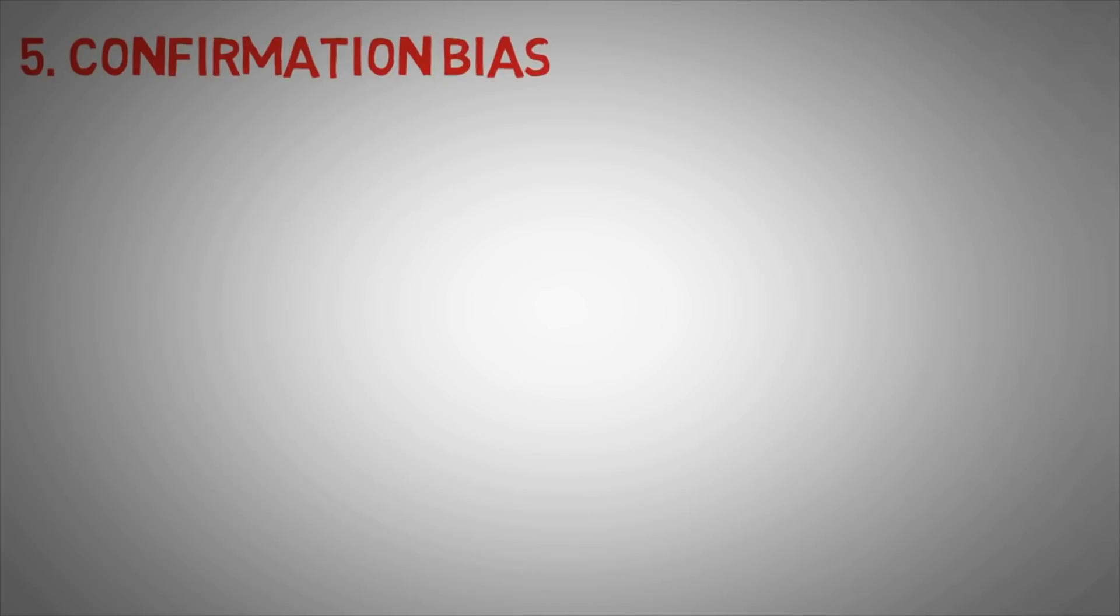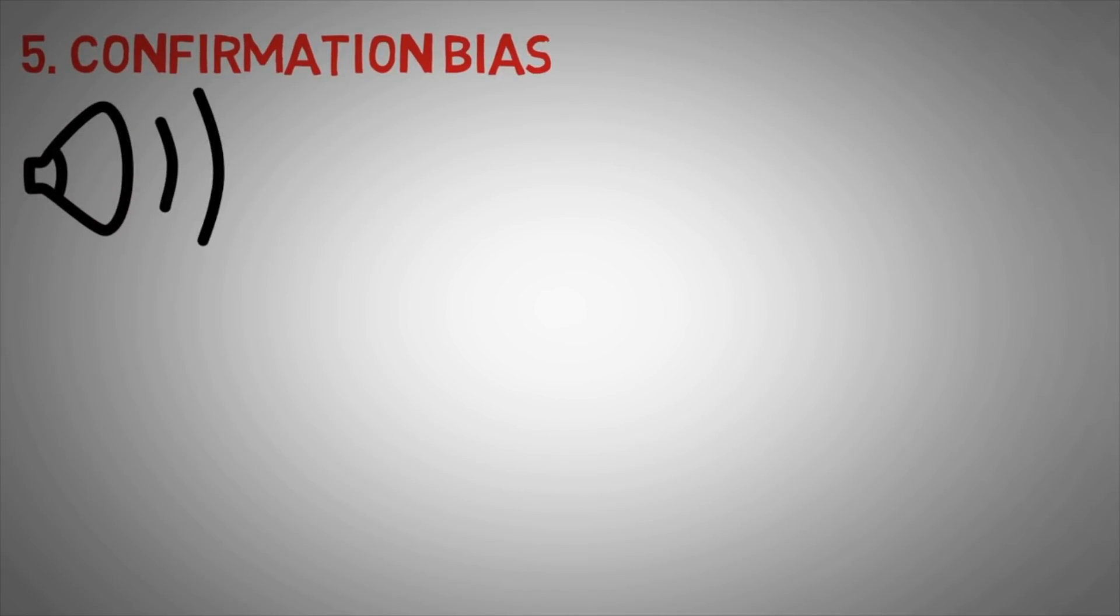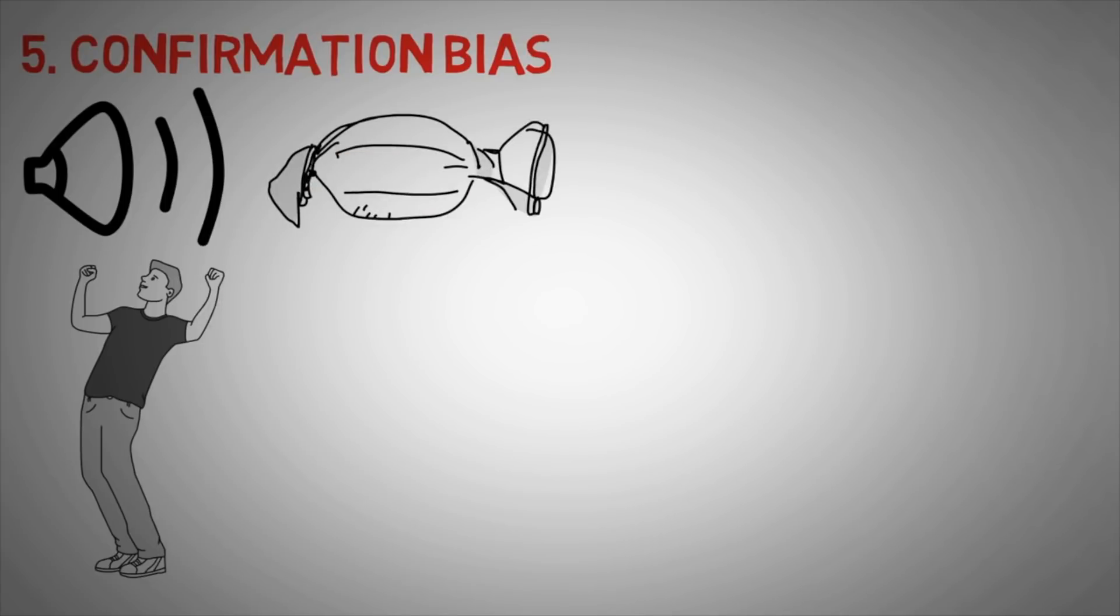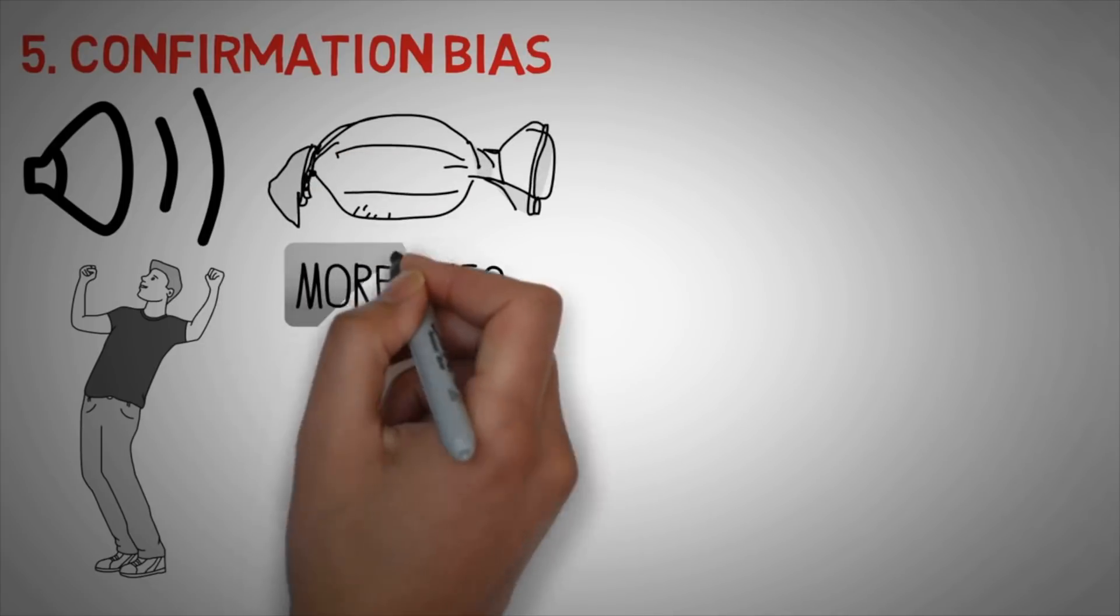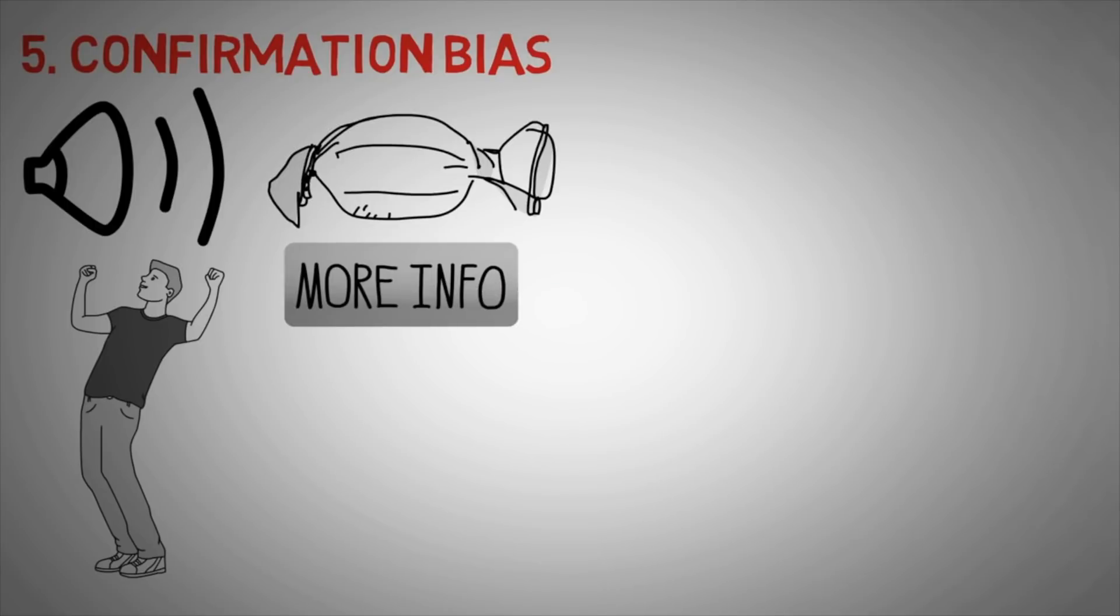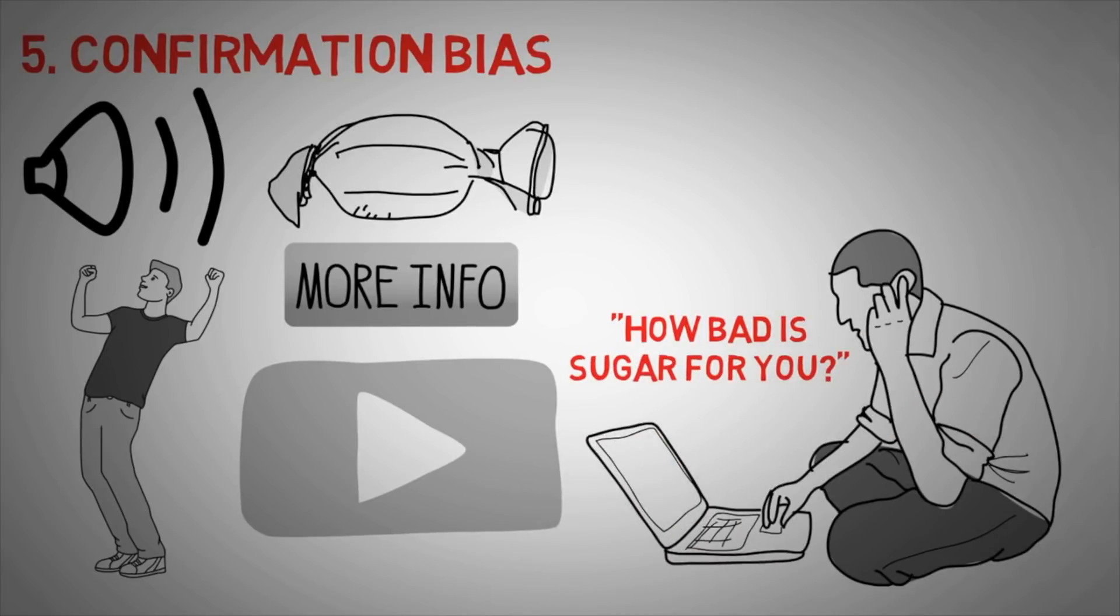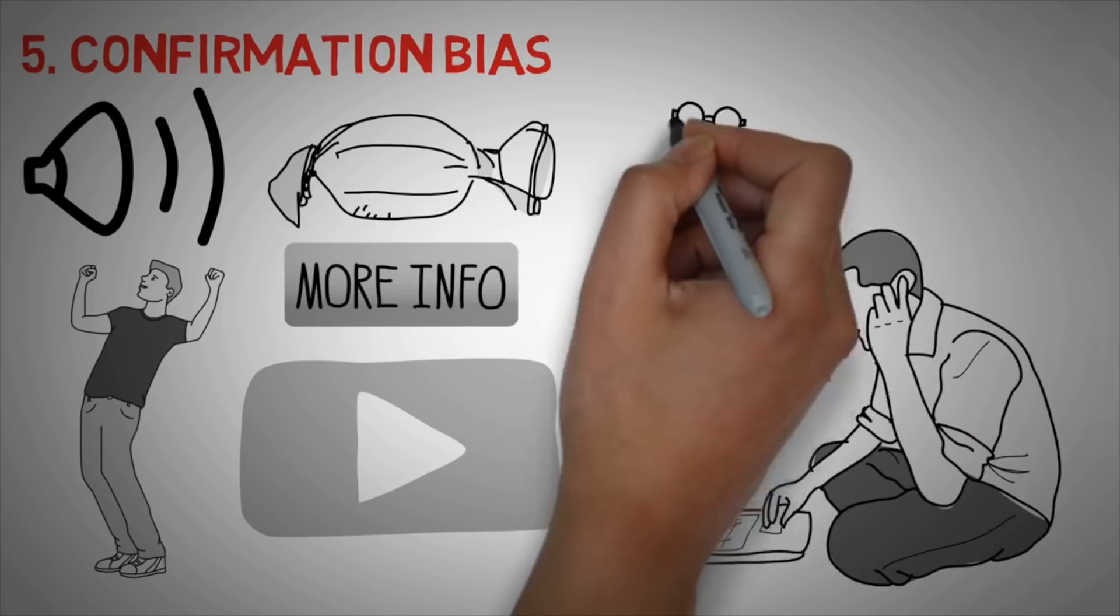Number five: confirmation bias. We tend to listen to information that confirms what we already know or even interpret the information that we receive in a way that confirms the current information that we already have. Let's say that your friend believes that sweets are unhealthy. This is generally a pretty broad belief. He will only focus on the information that confirms what we already know. He is more likely to click on videos that confirm that belief or read articles that support his argument. He doesn't go through and type 'Positive health effects of increasing blood glucose levels' or 'positive effects of eating a bowl of ice cream.' No, he will instinctively go to Google and type in 'How bad is sugar for you?'